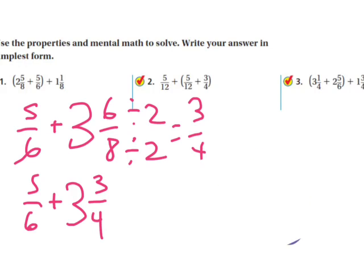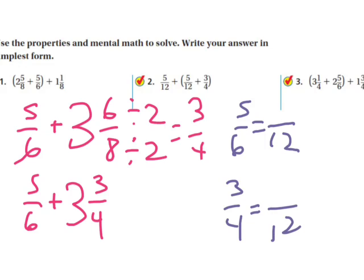So I'm going to find equivalent fractions. Five over 6 equals blank over 12. Three over 4 equals blank over 12. 6 times 2 is 12, so I multiply the top times 2 and I get 10. 4 times 3 is 12, so I multiply the top times 3 and I get 9.